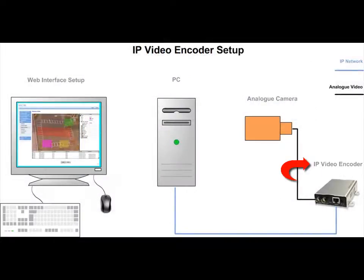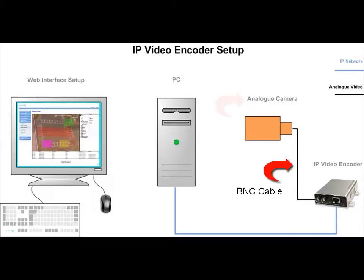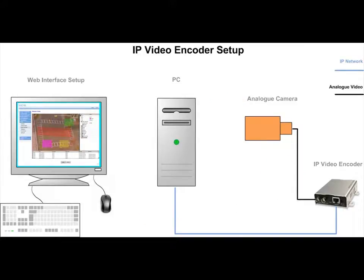You then need a Video IP Encoder, an analog camera, a BNC cable, and a network cable. The network cable can either be a crossover cable or a straight cable.